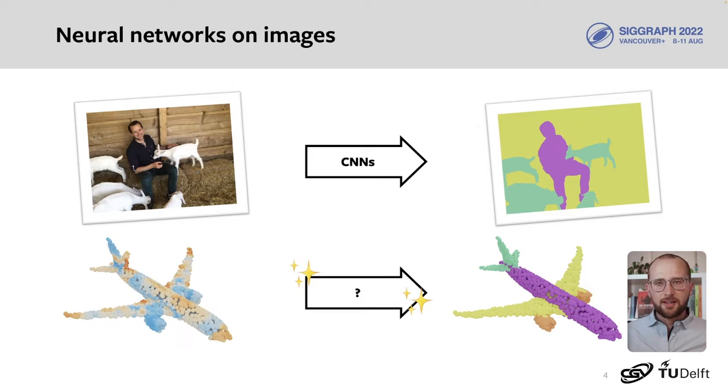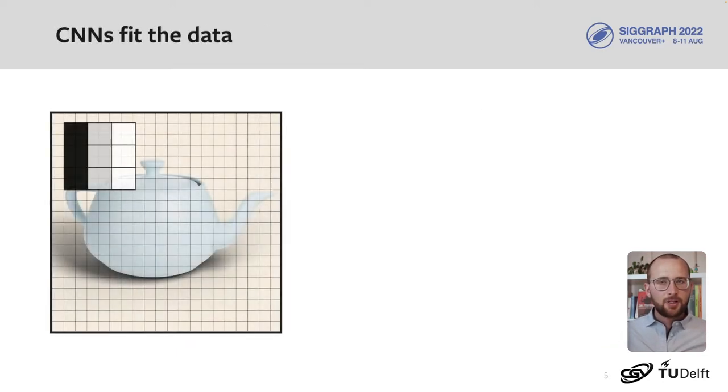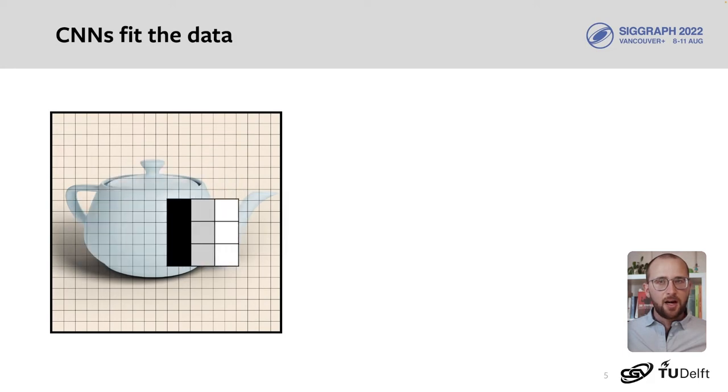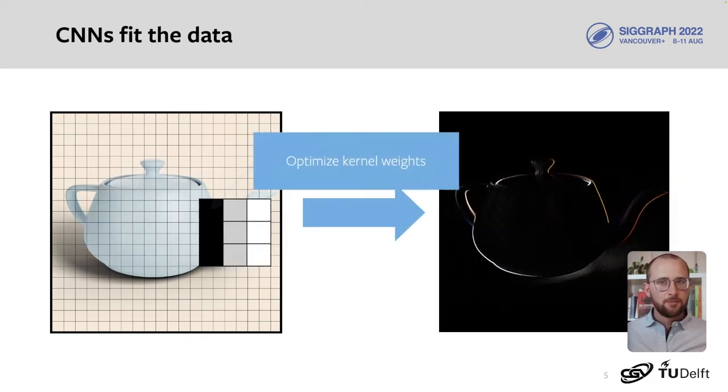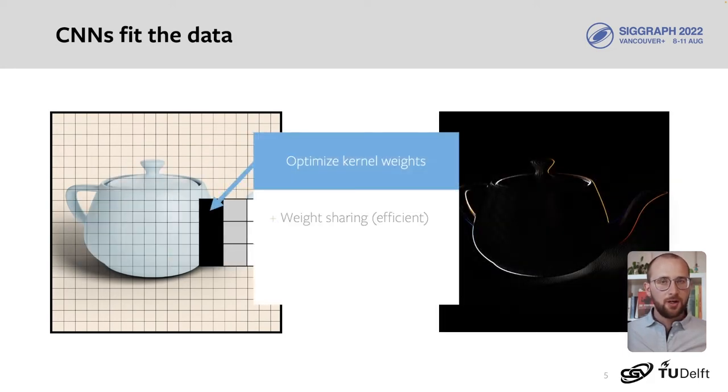Let's first consider why CNNs work so well on images. In CNNs, we convolve a kernel over the input and optimize the weights in this kernel. With this construction, we share weights, which is efficient. We also enforce translation invariance, meaning that we can find patterns such as vertical edges or faces, no matter where they are. This makes CNNs a very good fit for image data.